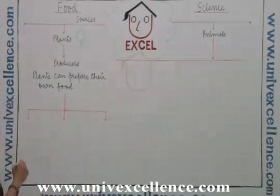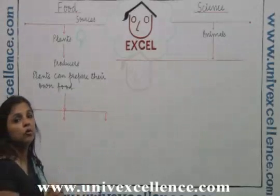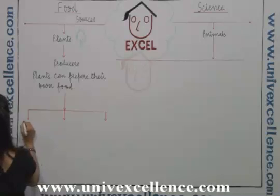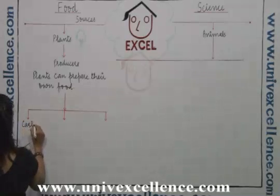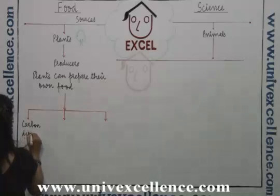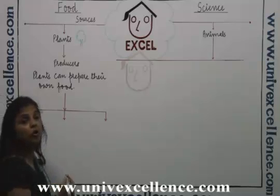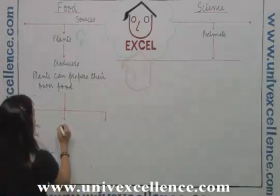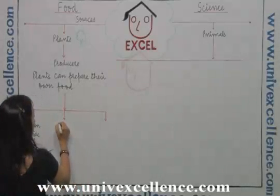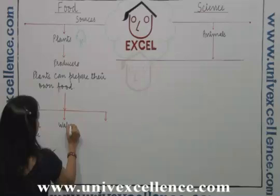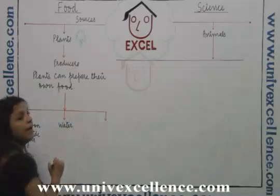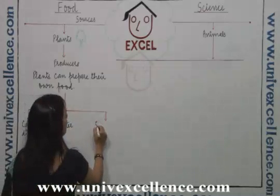The first one is carbon dioxide gas. The second non-living thing which plants use is water, and the third is sunlight.